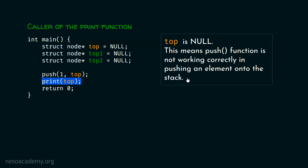This means the push function is not working correctly in pushing an element onto the stack. Top is initialized to null, meaning initially the stack is empty. After calling the push function, one must be inserted onto the stack, so the stack should no longer be empty and there must be at least one element. Therefore, top can never be null in this case. Hence, there must be some problem in this push function — maybe it is not working correctly, and this might be the reason why we got stack underflow.